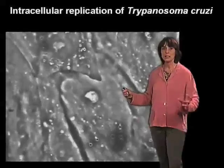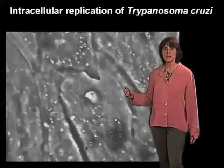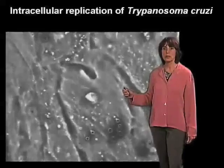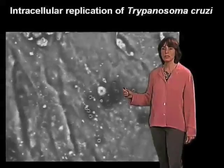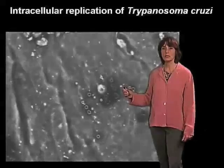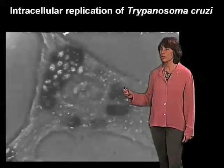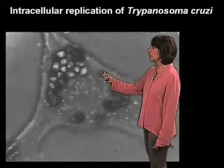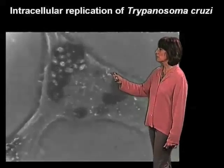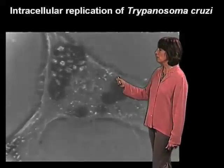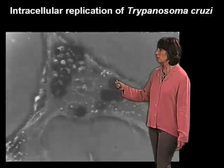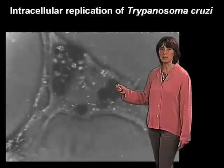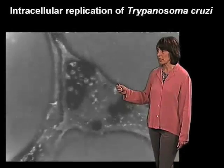As this parasite enters this replicative stage, it starts undergoing binary fissions. We can see here in this cell that there are already several parasites replicating in the cytosol, and we can see clearly also that the whole cell remains quite viable throughout this process.